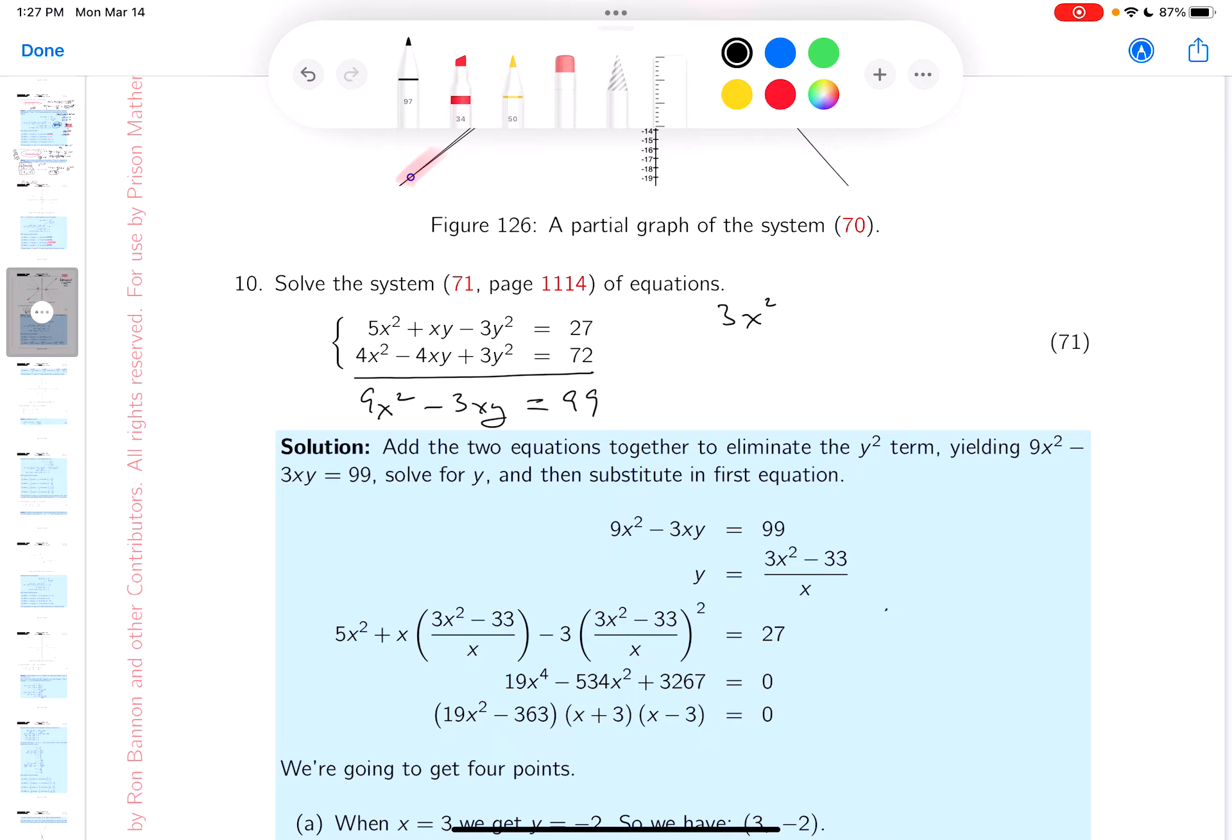Sorry about that. Minus xy equals 33. And then I'm going to solve for x, right? So 3x² minus 33 equals xy. I'm sorry,